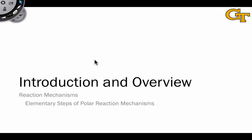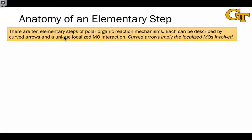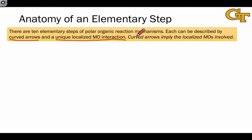Let's begin with an introduction and an overview of the elementary steps. There are 10 elementary steps that are common to polar organic reaction mechanisms. We describe each of these using curved arrows to show how electrons reorganize themselves during the steps, and use a unique localized molecular orbital interaction between a filled and empty localized molecular orbital — like a sigma MO, pi MO, non-bonding orbital, empty atomic orbital, pi star or sigma star anti-bonds. Importantly, curved arrows imply the localized molecular orbitals involved.